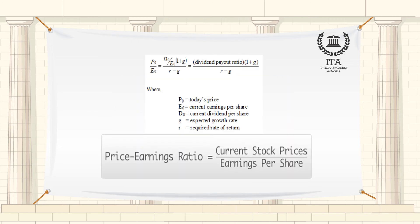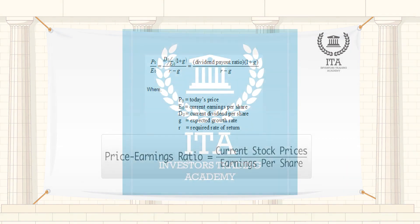To calculate the P-E Ratio: 1. Establish total profit after tax and interest for the past year. 2. Divide this by the number of shares issued. 3. This gives you the earnings per share. 4. Divide the price of the stock or share by the earnings per share. 5. This gives the price-earnings or P-E Ratio.